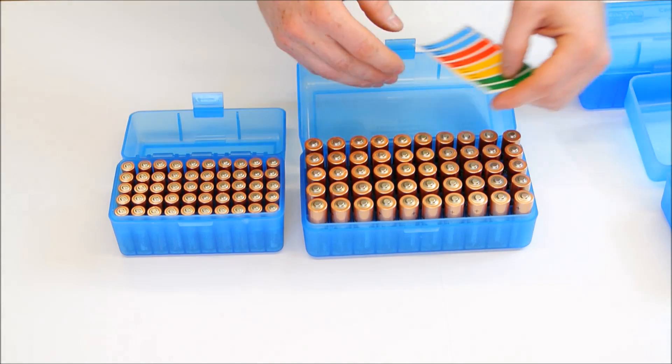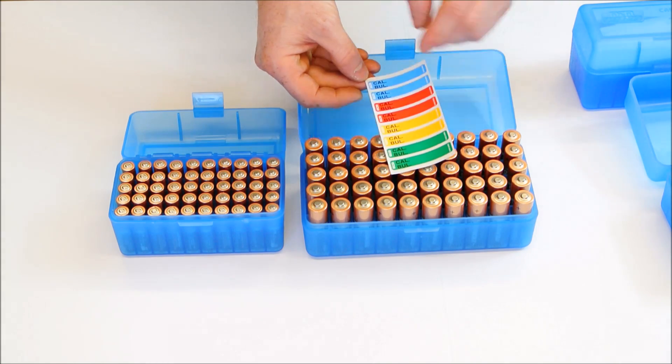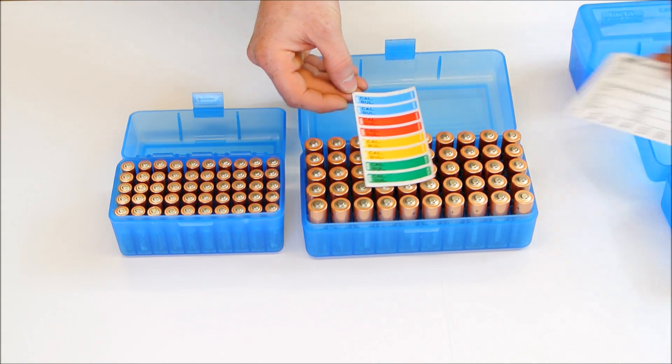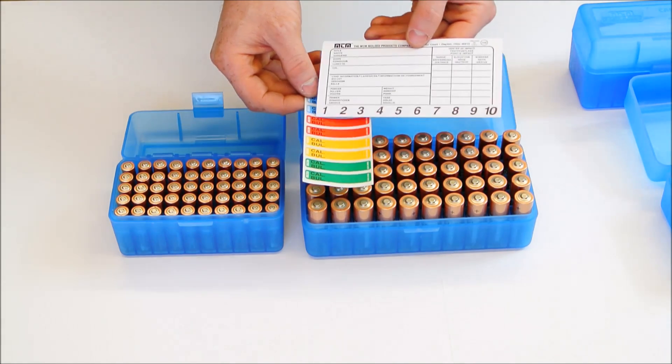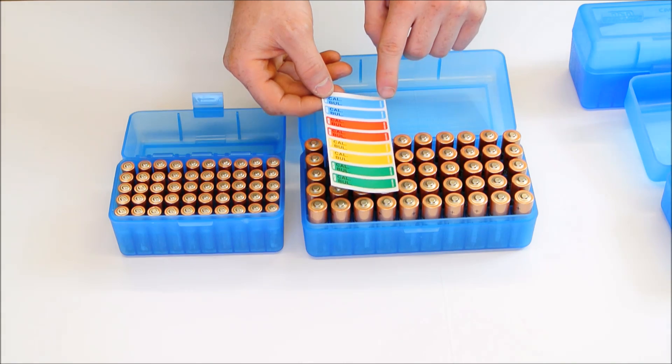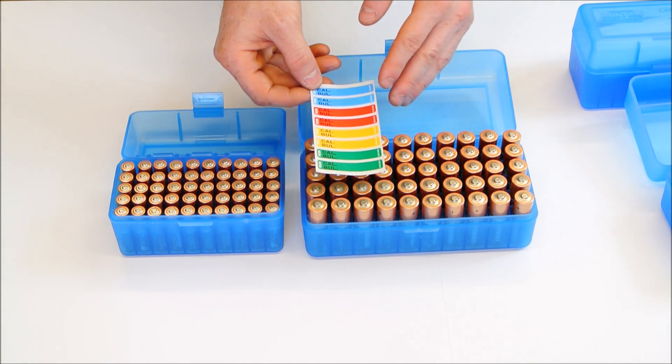The other great thing about this is they come with this little label here. Normally it's used for caliber, bullet, and reloading data. And what you can do with these labels is simply write down the date that you purchased the batteries or the expiration date on the batteries.